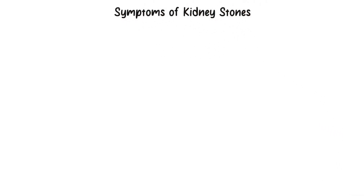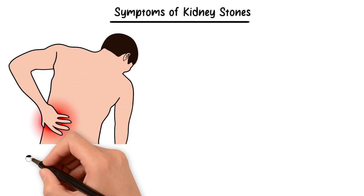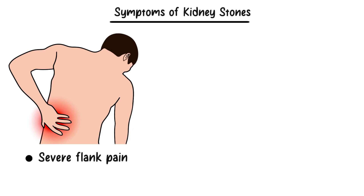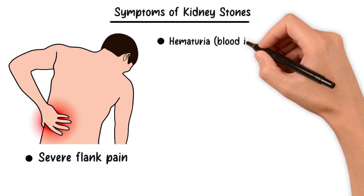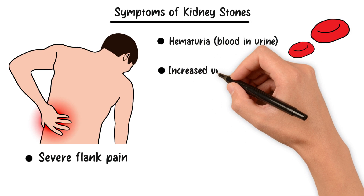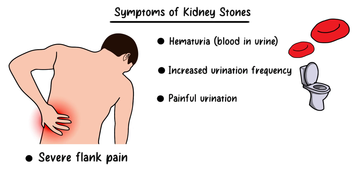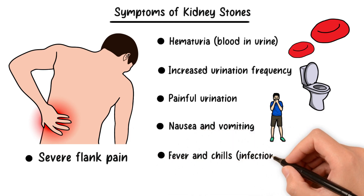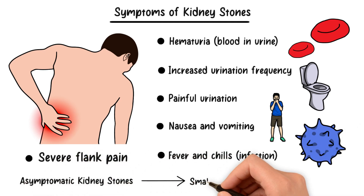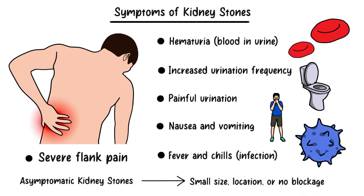Let's explore the signs and symptoms of kidney stones. The hallmark symptom is intense, severe flank pain — often described as one of the most excruciating experiences — usually originating in the back or side below the ribcage. The pain can come in waves and may radiate down to the lower abdomen and groin. Another common symptom is hematuria. Kidney stones can irritate the urinary tract, leading to increased frequency of urination and painful urination with a burning sensation. Some individuals may experience nausea and vomiting. In some cases, a stone causing an infection or blocking urine flow can lead to fever and chills. Kidney stones can sometimes be entirely asymptomatic if the stone is small, located in a less sensitive area, or simply not causing any blockage or irritation.